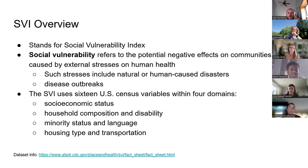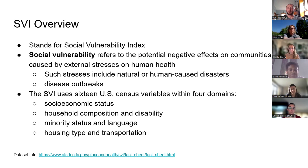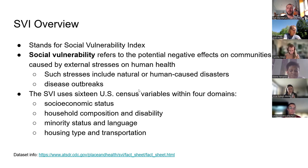There's also the SVI, which stands for Social Vulnerability Index, and it refers to the potential negative effects on communities caused by external stresses on human health. These stresses can include natural or human-caused disasters and disease outbreaks. The SVI uses a total of 16 U.S. Census variables organized into four domains or themes: socioeconomic status, household composition and disability, minority status and language, and housing type and transportation.